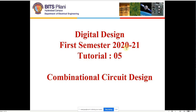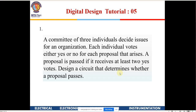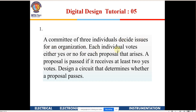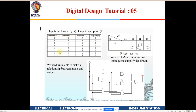Good morning everybody. Let's start with today's tutorial on combinational circuit design. We'll take some real-life examples and see how to design combinational circuits. The first problem is a committee of three individuals deciding issues — each individual votes yes or no for each proposal. A proposal passes if it receives at least two yes votes. Have we encountered a similar circuit before? Yes, it's the three-bit majority circuit.